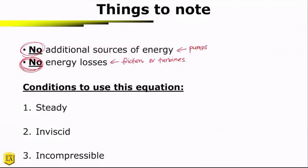The conditions to use this equation are that we have steady flow, we have inviscid fluid. This just means that we have no friction. And incompressible, this means that our density is constant as we're moving along the pipe.